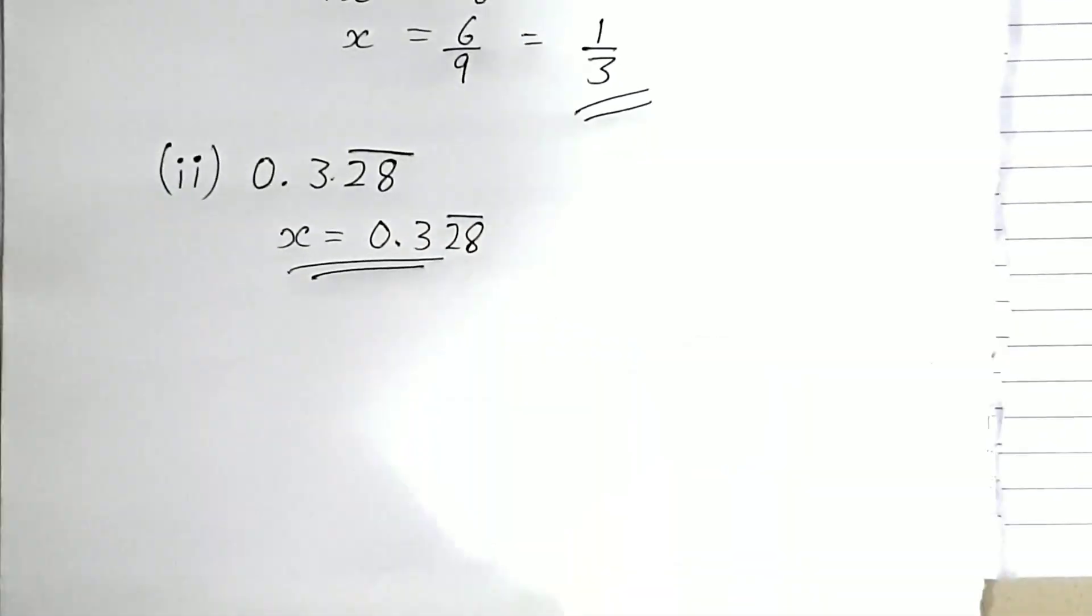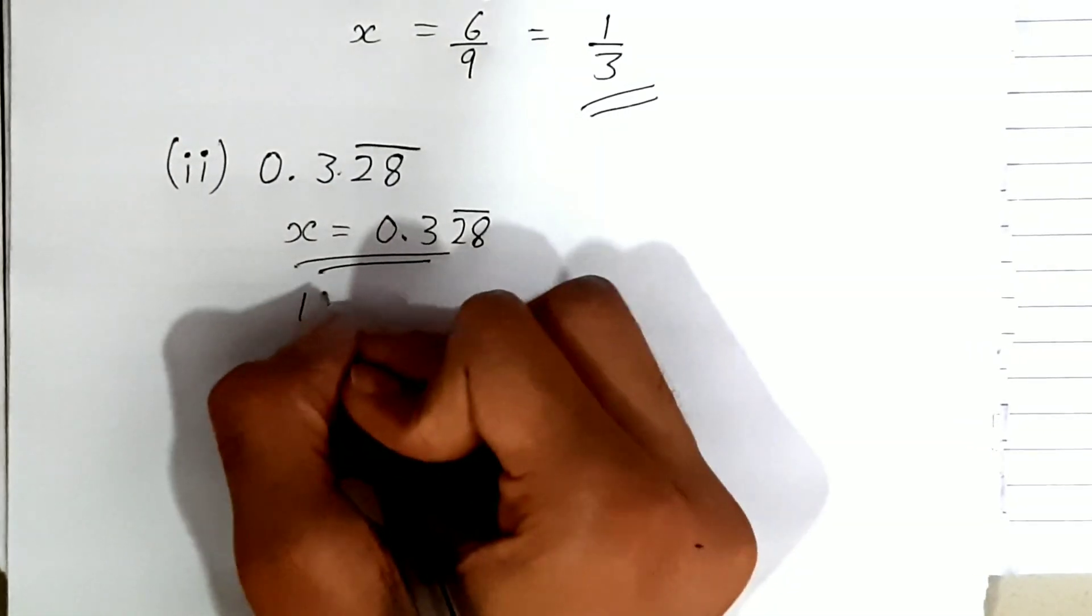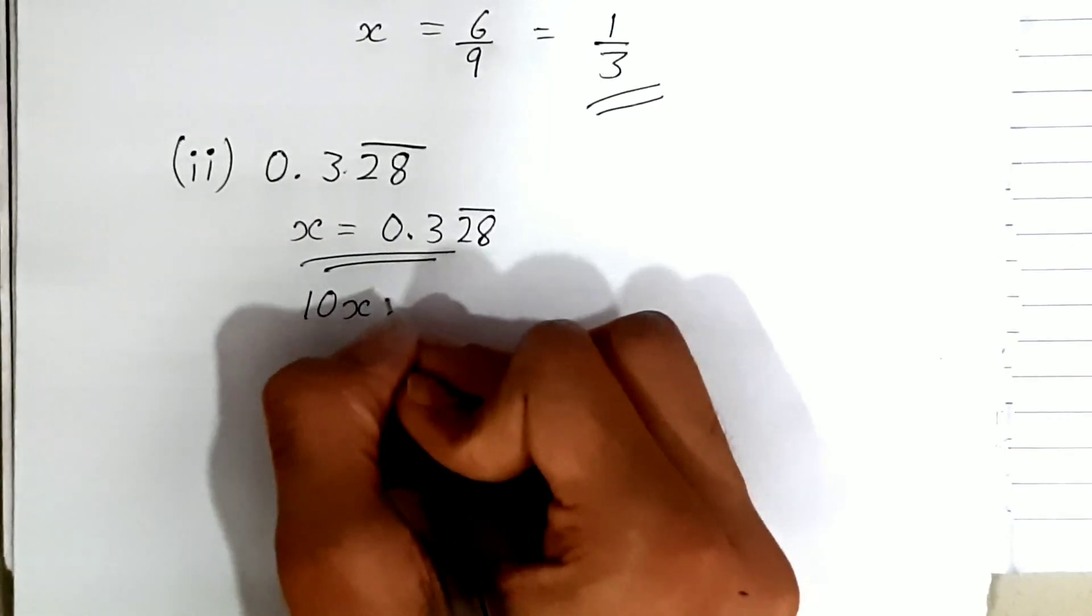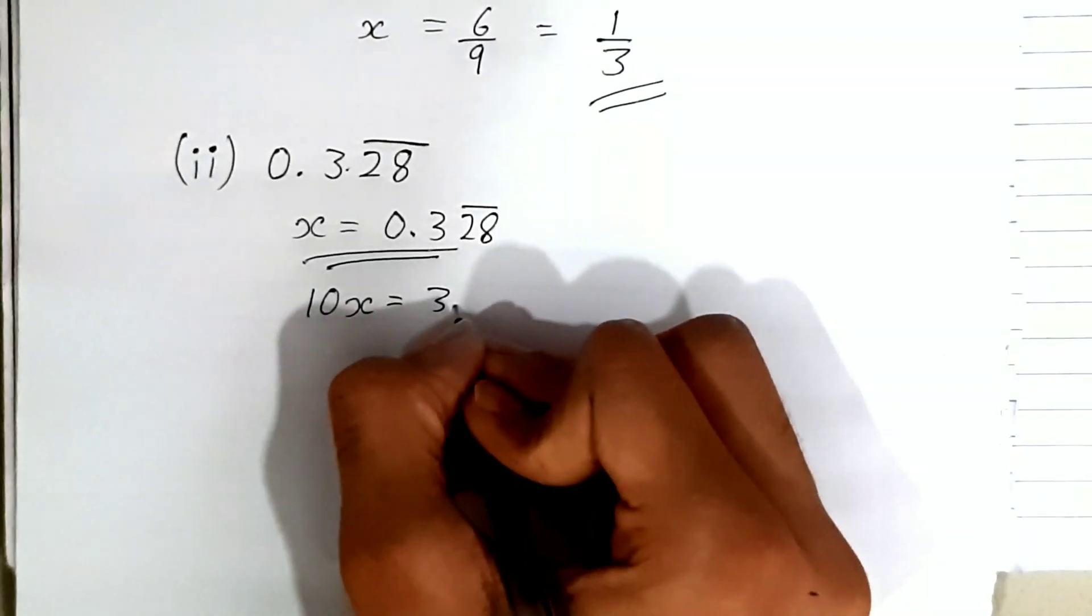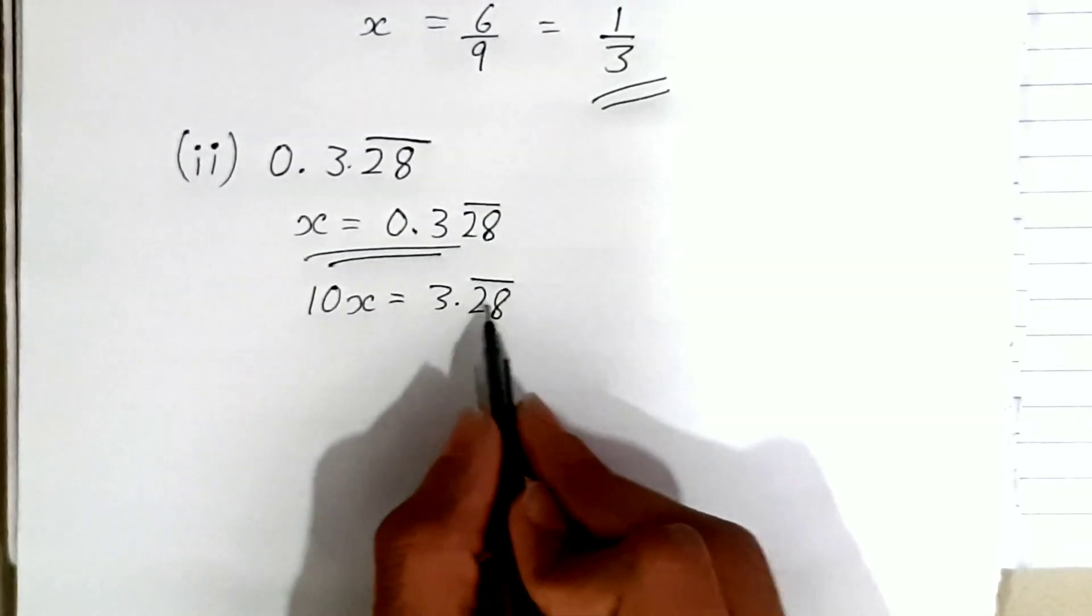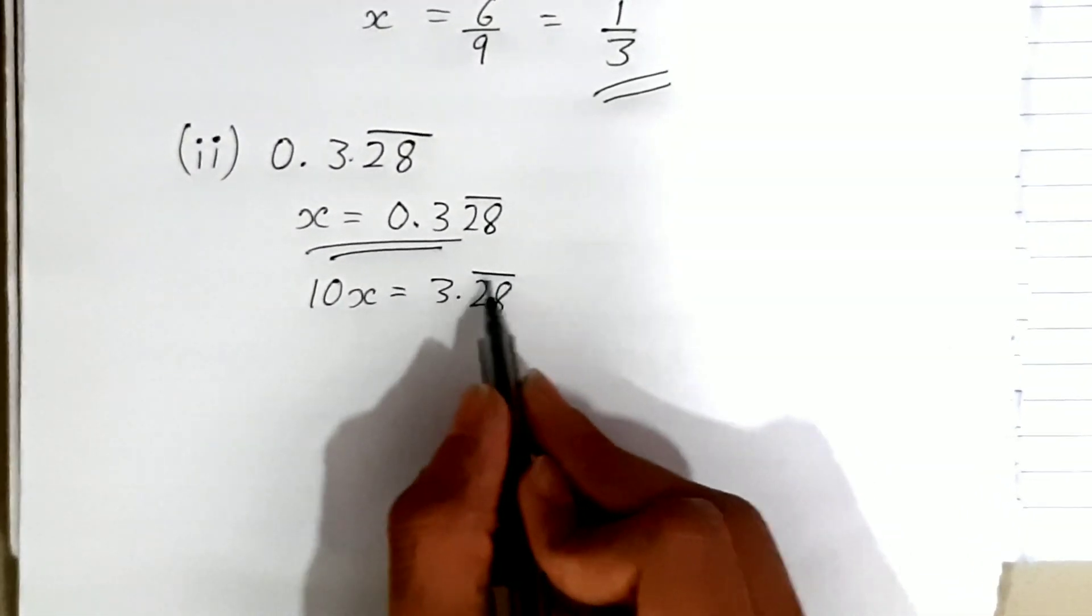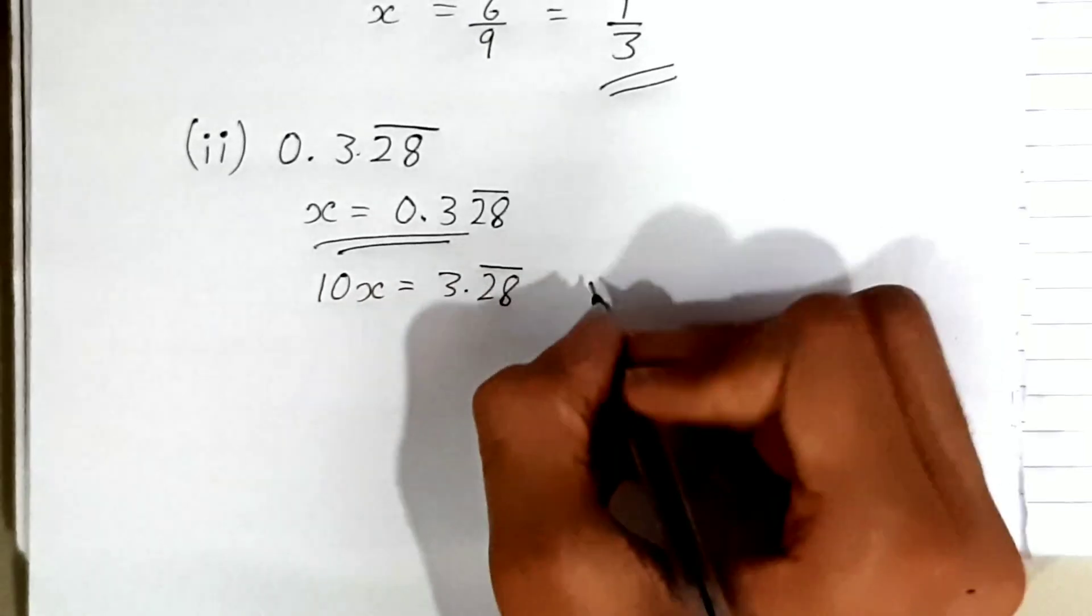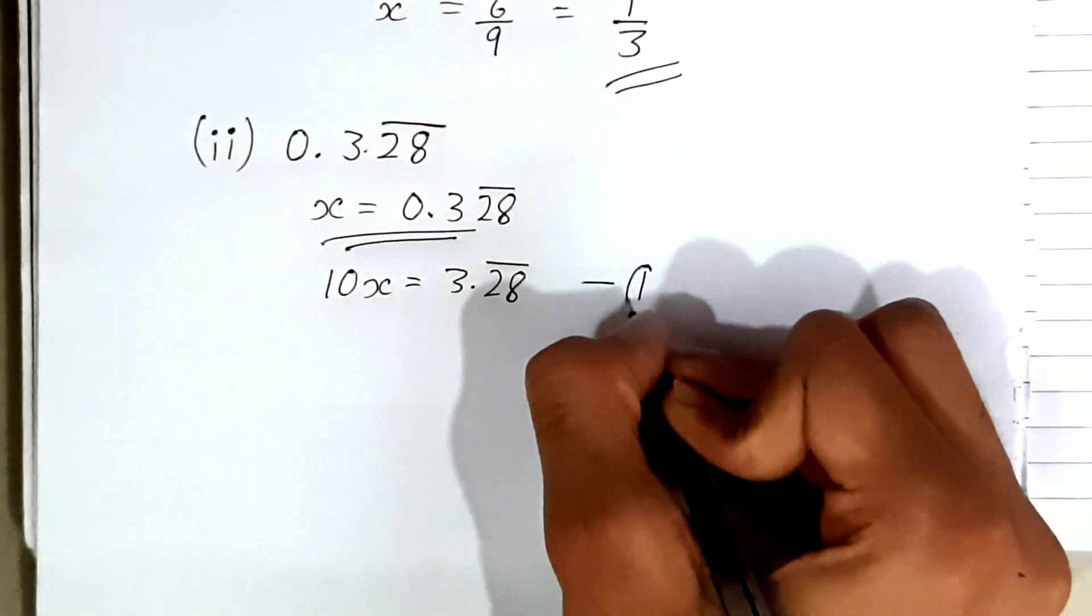So we'll take 10x = 3.2̄8̄. This is our equation 1. Now for equation 2, we'll multiply by 100.